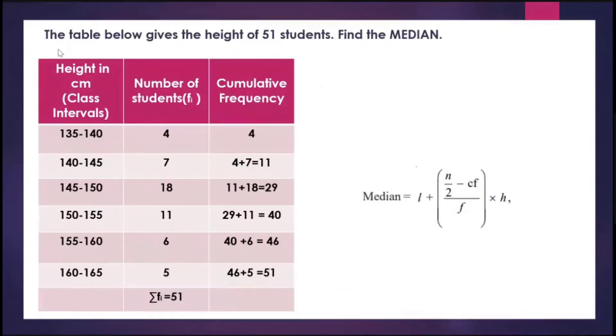Now the formula, as I told you, is L plus N by 2 minus CF upon F into H. Let us find the median class. N equals 51, so 51 divided by 2 is 25.5. The cumulative frequency more than 25.5 and closest to 25.5 is 29.